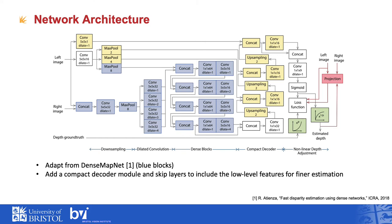We adapt a dense map net with an additional compact decoder and skip layers to include low-level features for finer estimation. Therefore, the network is shallower than many state-of-the-art methods while providing comparable, accurate depth results. The matching process of the corresponding points between the left and right images is performed at a lower resolution — downsampled via a max pooling layer with a downscale factor of 8 used throughout this work. This improves computational speed, reduces memory requirements, and overcomes problems of large disparities.